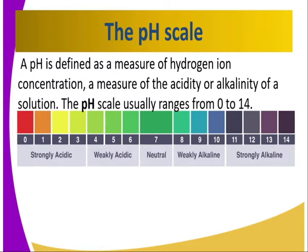Universal indicator comes with a pH scale; they can't be used inseparably. Neutral is 7. From 7 going to the left, the strength of acidity increases. So 4, 5, 6 are weak acids, while 0, 1, 2, 3 are very strong acidic substances.